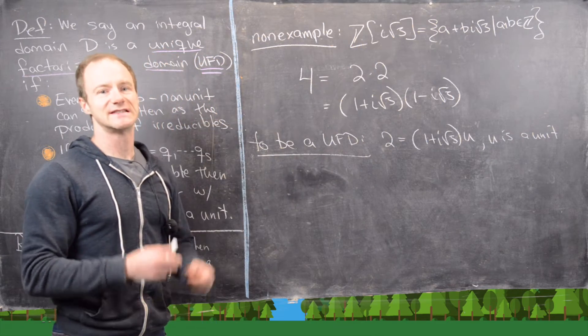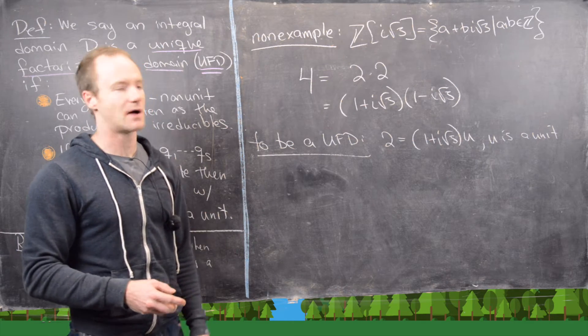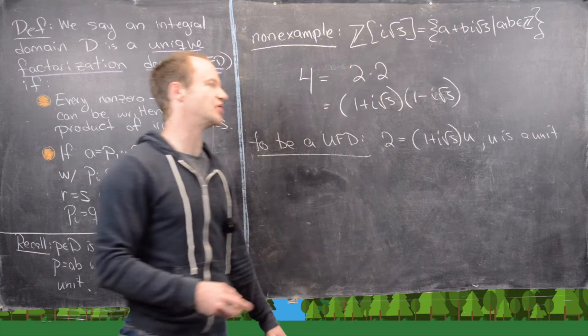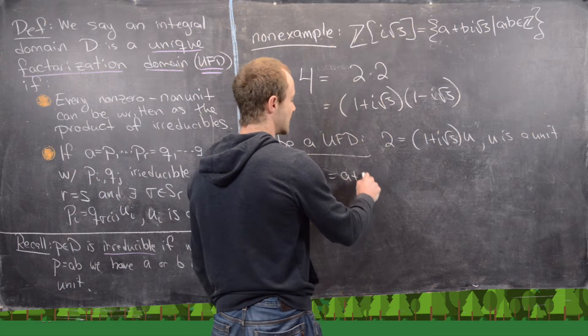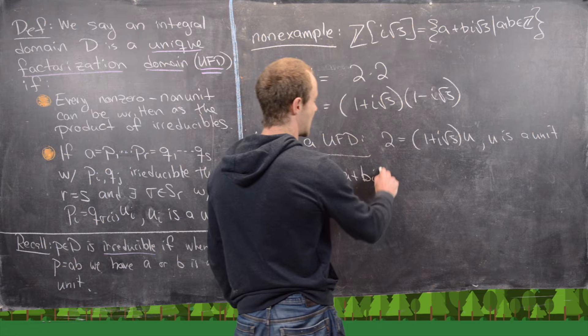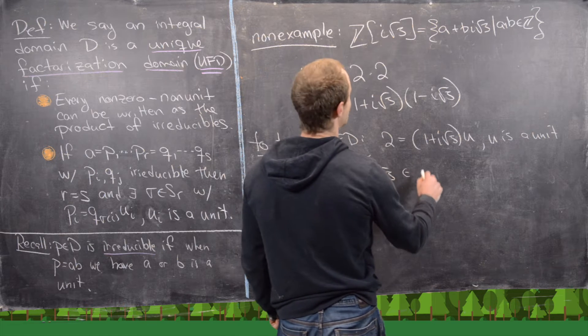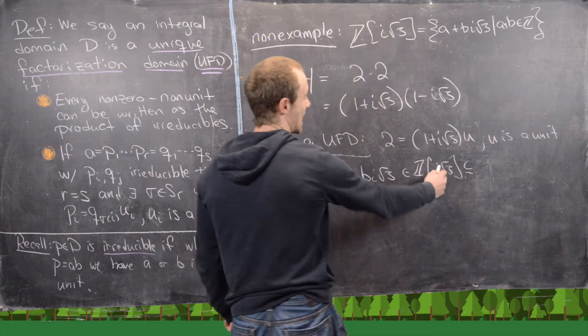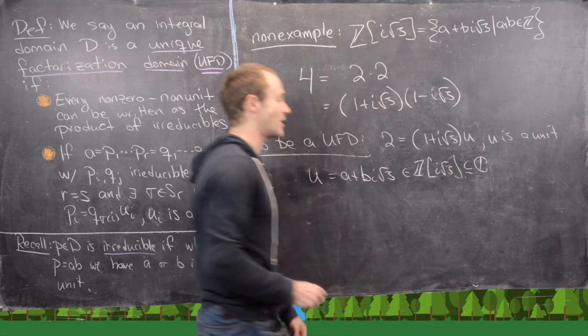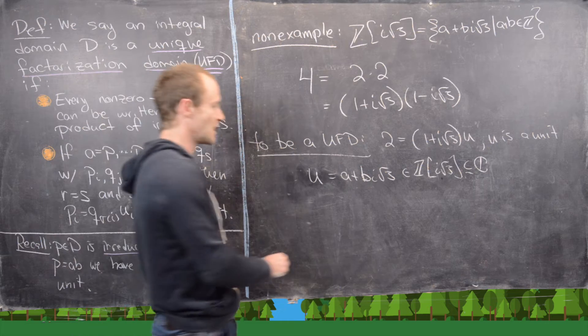But then another thing to notice is that if U is a unit within this ring, then its inverse is the same as its inverse in the complex numbers because we can just consider U as being an element from the complex numbers.